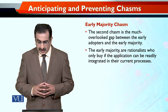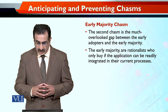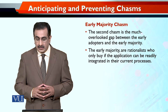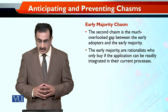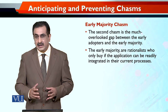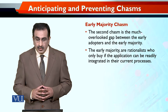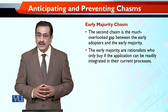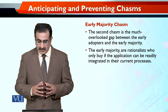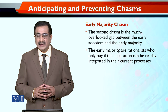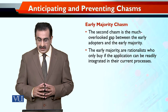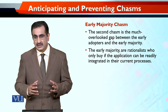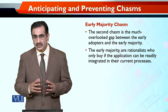The second chasm is a much overlooked gap between the early adopters and the early majority. The early majority are rationalists and pragmatists who only buy if the application can be readily integrated into their current processes.